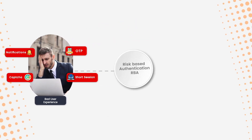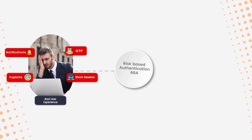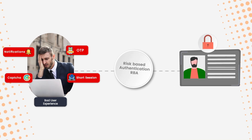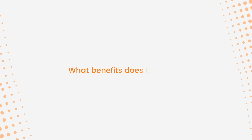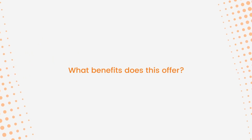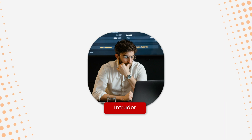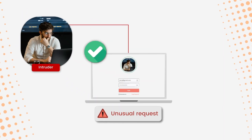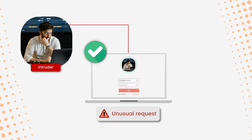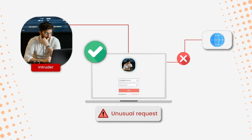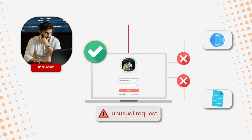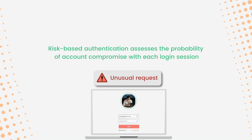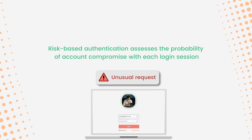To overcome this issue, risk-based authentication is required, as it secures your user identity and makes the end-user login experience seamless. Suppose someone wants to access your application and they have the right set of login credentials, but that request is unusual. An unusual request could look like a login attempt from a country where you don't do business, or there is an access request for a sensitive file. Risk-based authentication assesses the probability of account compromise with each login session.